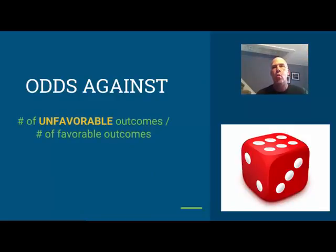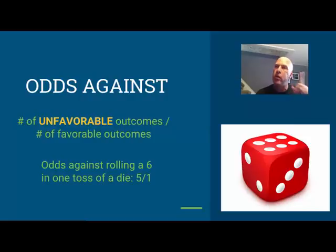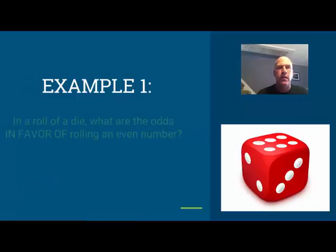For odds against, we look at the unfavorable outcomes first and compare it to the favorable outcomes. So the odds against rolling a six in one toss of a die: there are five sides I don't want to get and one side I would want to get. So the odds against are five to one, and I can again use colon notation if I like.